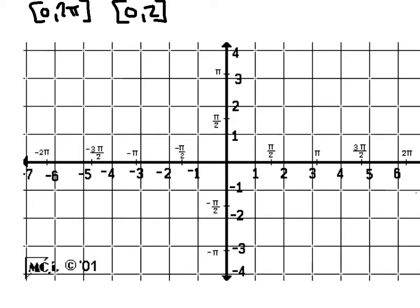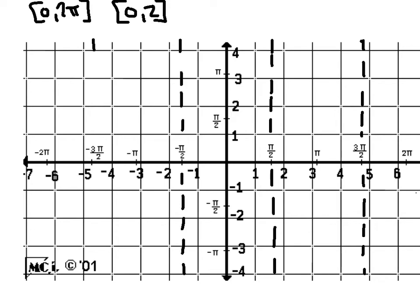When graphing tangent, here's the order of operations: first, identify and draw your vertical asymptotes at π/2 and 3π/2. That's your first move every time. Second, identify your roots at negative 2π, negative π, 0, π, and 2π. Third, plot the special values from 45° — tangent of π/4 equals 1, and so on.